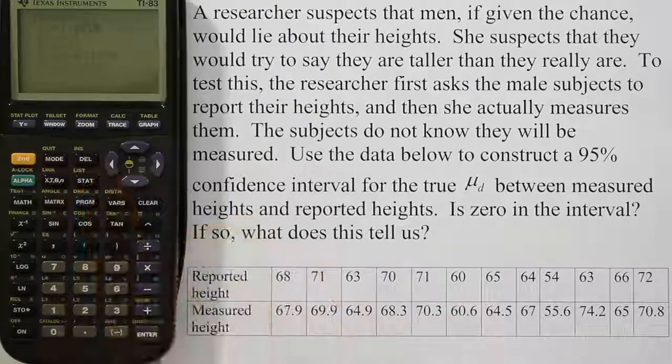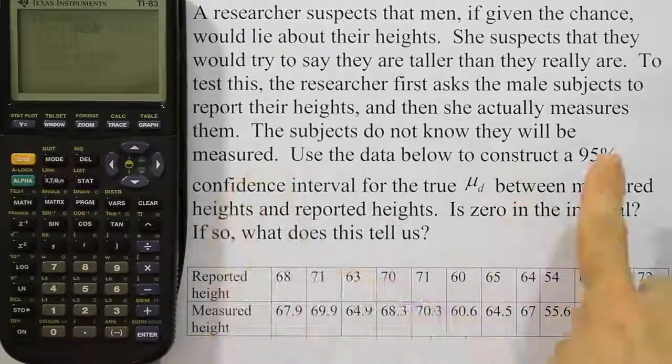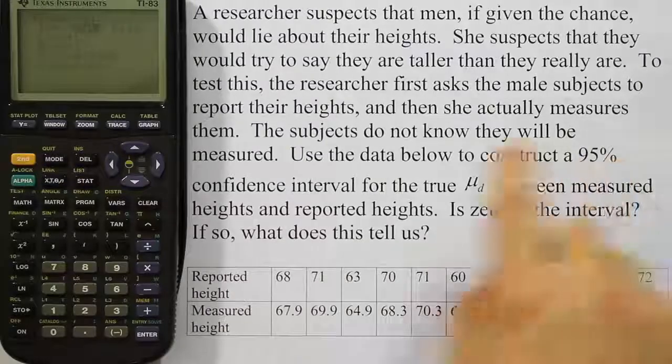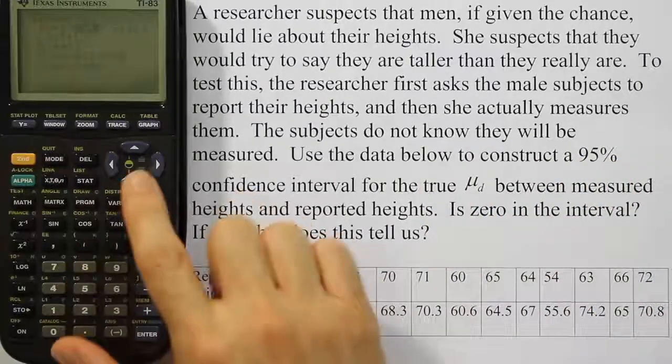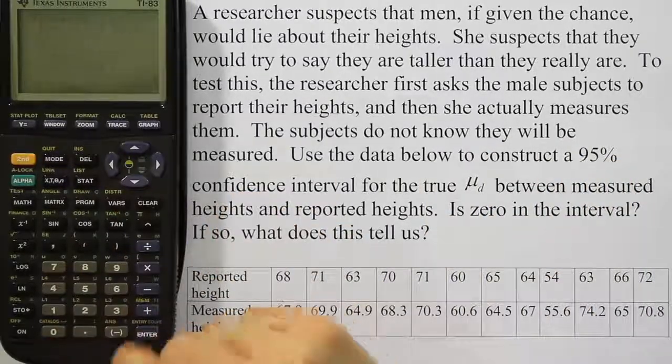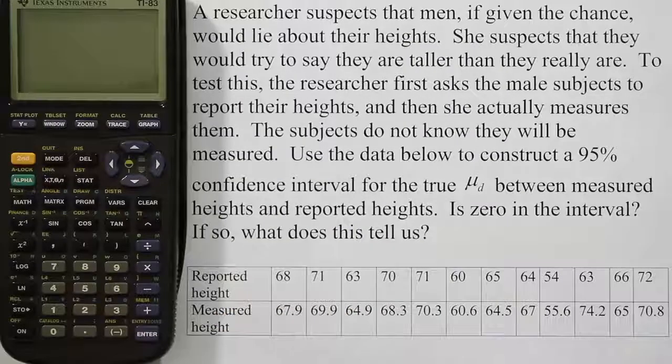Arrow down to where it says confidence level. In this case, we're looking at a 95% confidence interval. So we're going to do 0.95, come down after that, hit calculate. And in just a moment, it will give us our T interval.